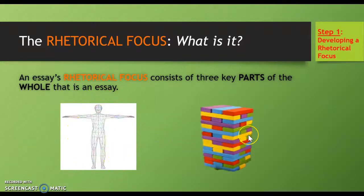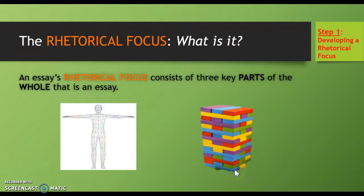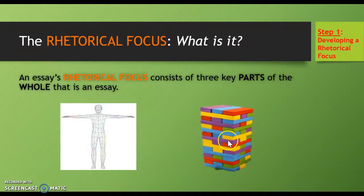Now let's look at this photograph of a stack of wooden building blocks painted different colors. We can see it's a whole made up of different parts, like the human body. If it truly were an essay, the blocks at the top — the purple, the blue, and the red blocks — are parts of the introduction. The blocks at the bottom, the yellow block and the blue block, would be parts of the conclusion. And all the blocks in the middle would be the body of the essay — topic sentences, transitions, and supporting examples.